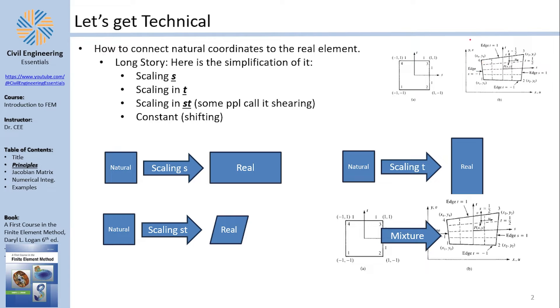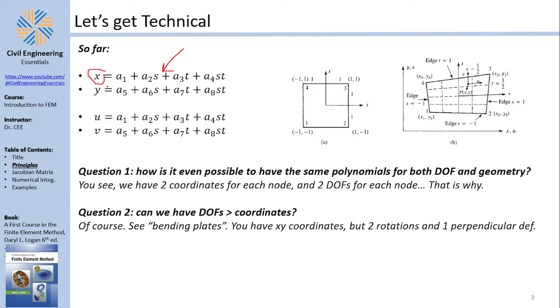Now to recap very quickly, I have a real element and I somehow project and back project the real element to a fantasy or perfect element, the isoparametric element. This projection happens because we have scaling in s, scaling in t, scaling in st and some constant shifting which basically means that the center of that element is going to be shifted. We know that x is a function in s and t and y is a function in s and t, and also we know that u and v are functions of s and t. Now there are some questions that are remaining from last time I have not yet addressed.